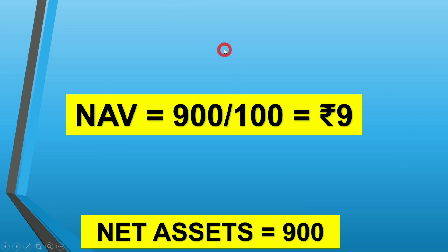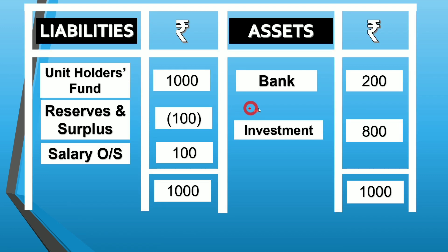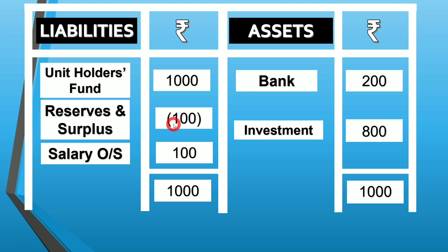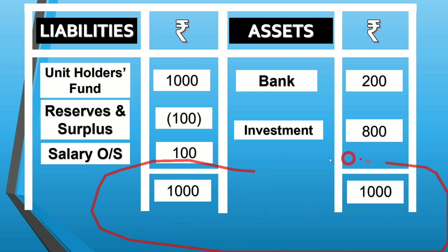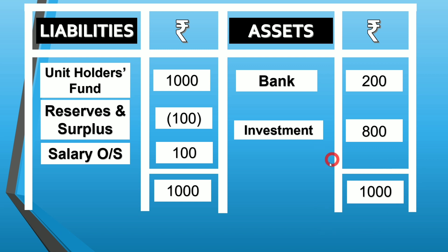Now assume instead that the salary of rupees 100 is outstanding and not yet paid. In that case, bank remains at rupees 200, but we show salary outstanding of rupees 100 on the liability side and reserves and surplus of negative 100. The negative reserves and the positive salary outstanding cancel each other, keeping both sides balanced at rupees 1,000. NAV is still: 1,000 minus 100 external liability, divided by 100 units, equals rupees 9.